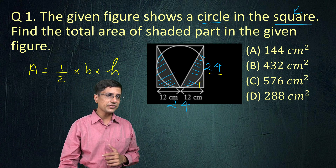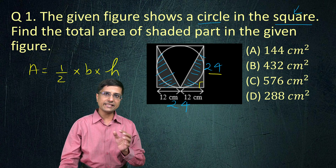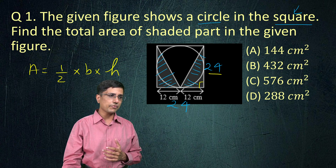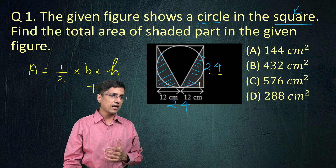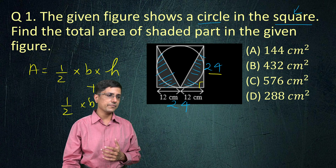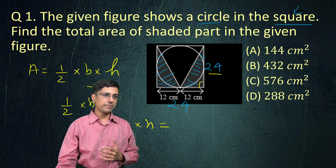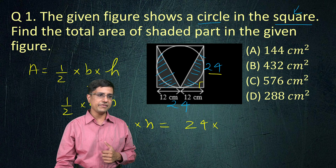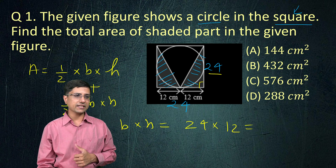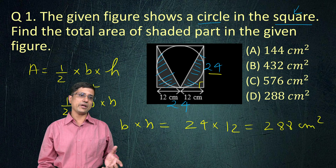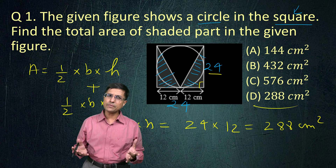Similarly, in this triangle also that would be the case. The two triangles are exactly equivalent. So our total area for the shaded region would be half base into height plus half into base into height, which is nothing but base into height. Base is 24 and height is 12, which comes out to be 288 centimeter square. So option D is our correct answer.